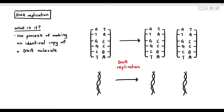What that means is, if you look at it — just to draw that out again — you have the original DNA molecule, and when DNA replication occurs, it produces two identical DNA molecules with two identical base sequences, no matter what.